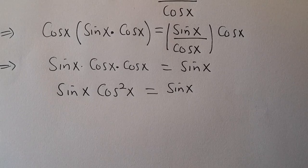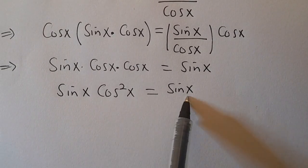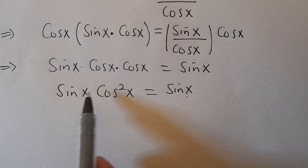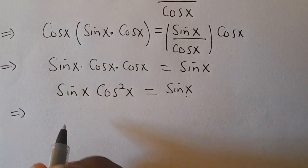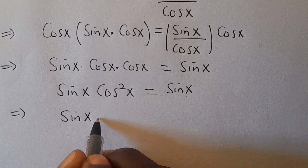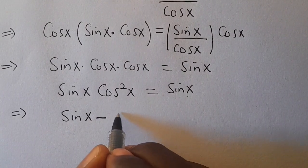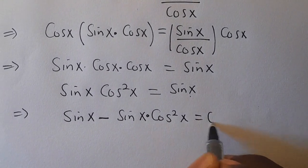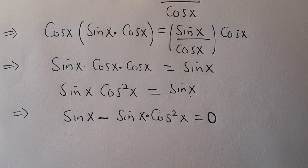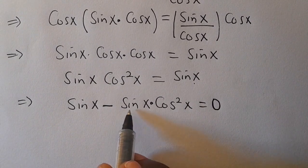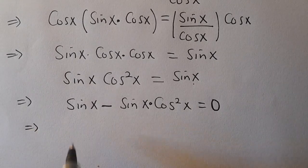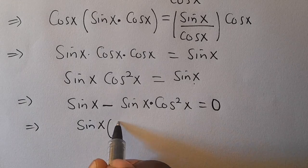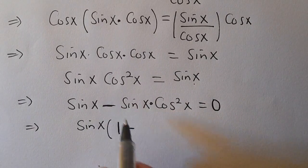So now from here, let's take everything to one side. We have sin(x) minus sin(x)·cos²(x) equals 0.